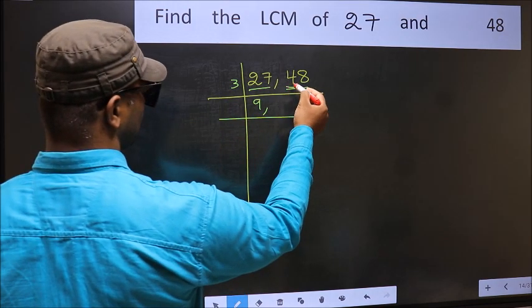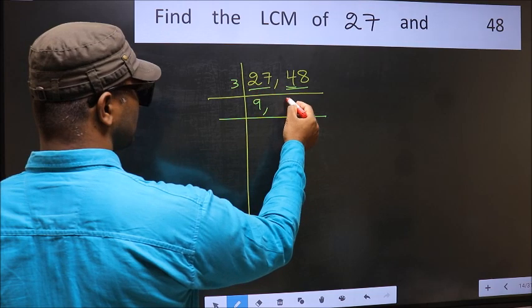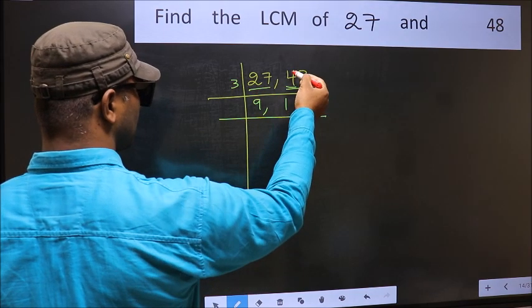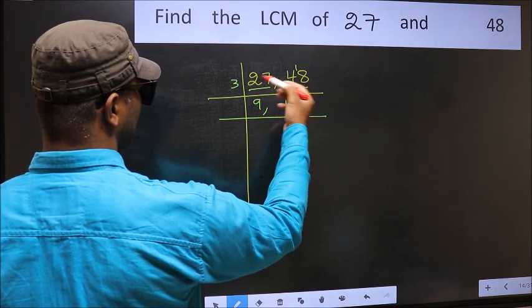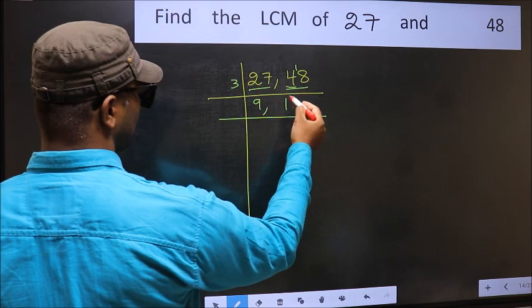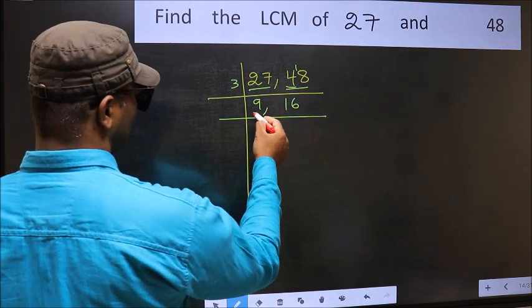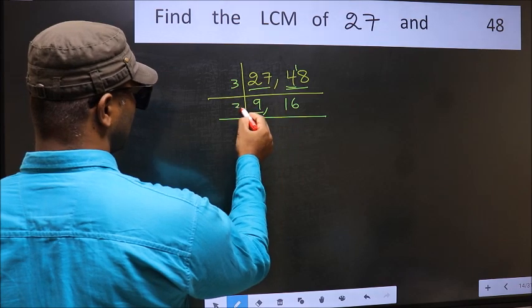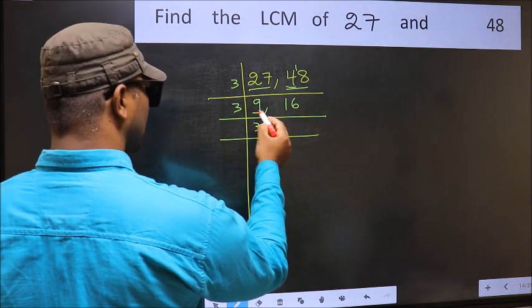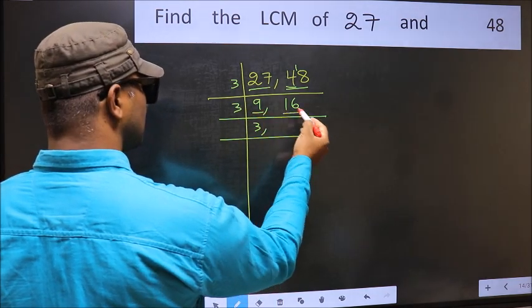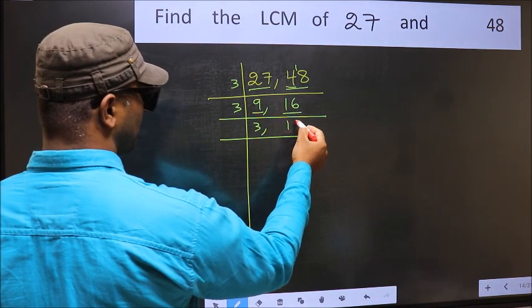The first number gives 4. A number close to 4 in the 3 times table is 3 once 3. 4 minus 3 is 1, carried forward gives 18. When do we get 18 in the 3 table? 3, 6, 18 — so we get 6. Now here we have 9, and 9 is 3 threes 9. The other number is 16, which is not divisible by 3, so you write it down as it is.